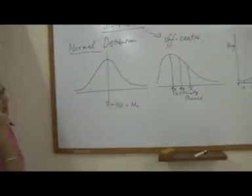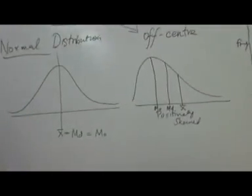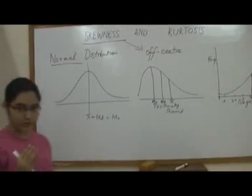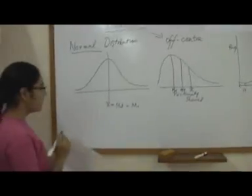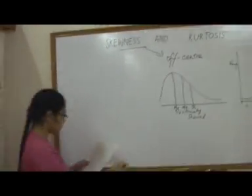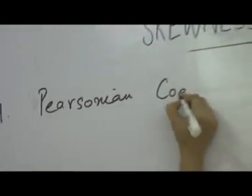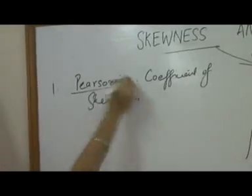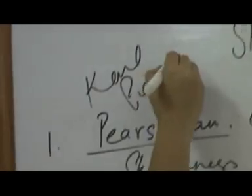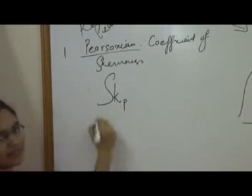We need to look at the coefficients of skewness. This is what you will be tested on in the university exam. So we have four coefficients of skewness and I shall discuss every one of them. The first one is the Pearsonian coefficient of skewness, named after the very famous statistician Carl Pearson, whom we encounter quite often in a statistics course. This Pearsonian coefficient of skewness is denoted by the symbol SK with a P as a subscript.